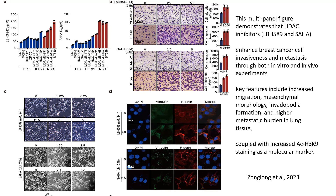Panel C shows how breast cancer cells change shape after treatment with increasing concentrations of HDAC inhibitors. Cells develop a more mesenchymal-like morphology, which is a characteristic of invasive cancer cells. This transformation highlights the role of these inhibitors in promoting traits associated with metastasis.